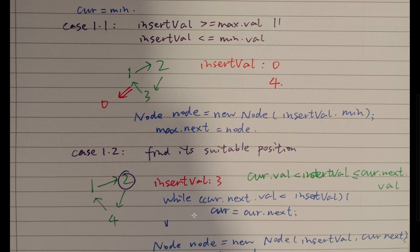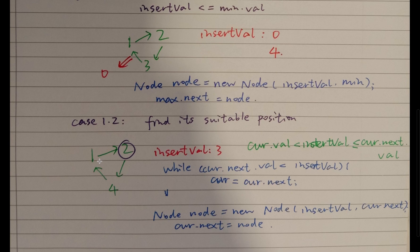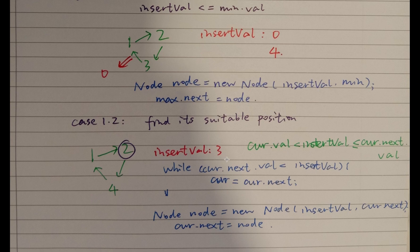If not that case, we need to iterate the list from the minimum node. For example, if the given list is 1, 2, 4 and we need to insert 3 — we should find a place where the current node is less than the insert value but the next node of the current node is greater than the insert value. While the current next value is less than the insert value, we keep going: curr = curr.next. Otherwise, we set node.next to curr.next and curr.next to the new node.